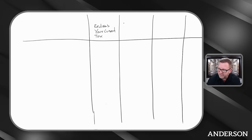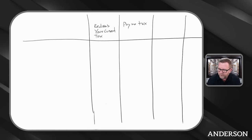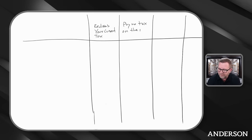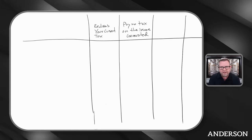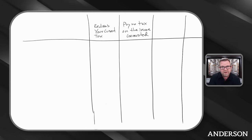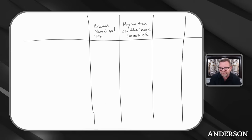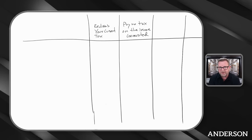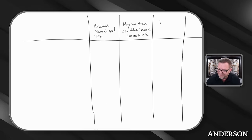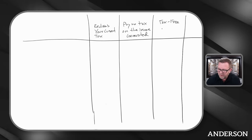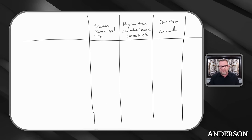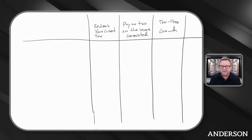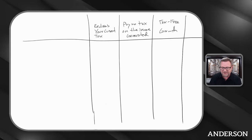Number two, which is you pay no tax on the income generated. In other words, the money that is kicking off is either going to be tax preferred or tax free. And then the last column is tax free growth. Can we compound inside these vehicles without having to pay tax as we go?